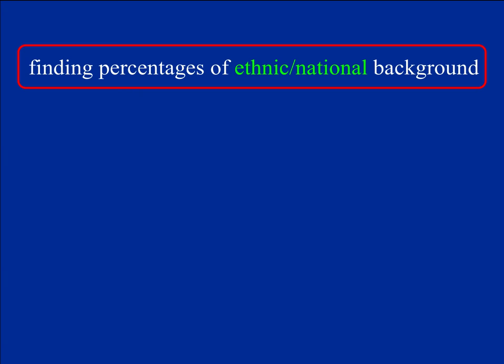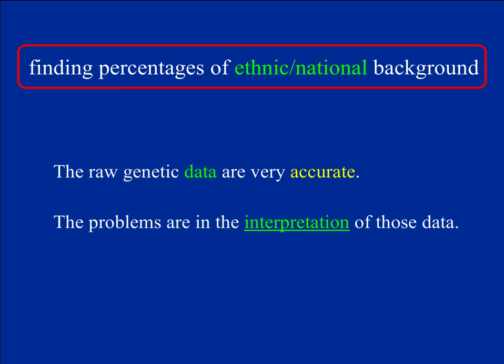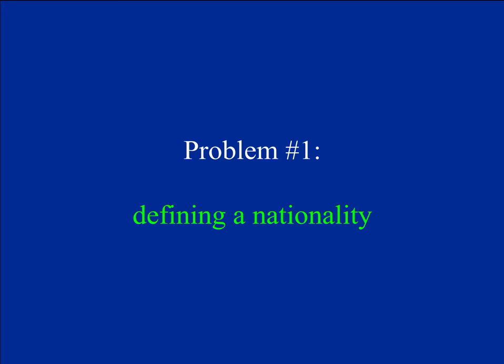Now we'll look briefly at the test that tries to find a person's ethnic or national background. The raw genetic data are very accurate, but the problems lie in interpreting those data. There are a couple of important problems — the first being defining what we mean by a nationality: what does it mean to be Irish, German, or Spanish? This is not quite as straightforward as it seems.